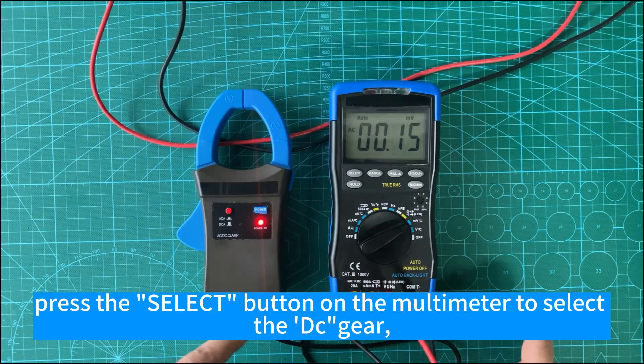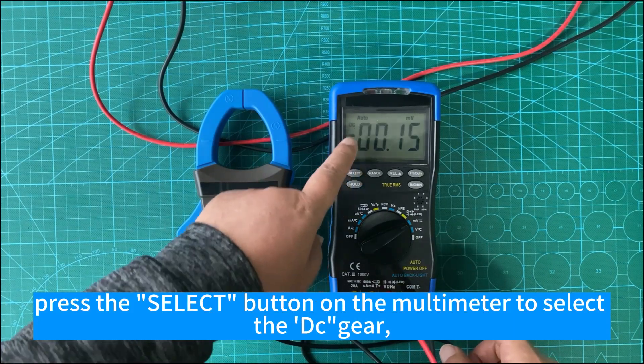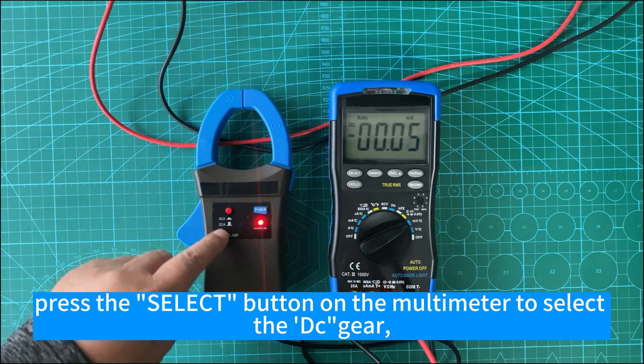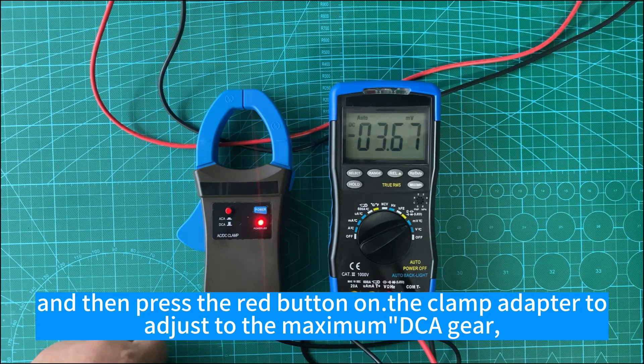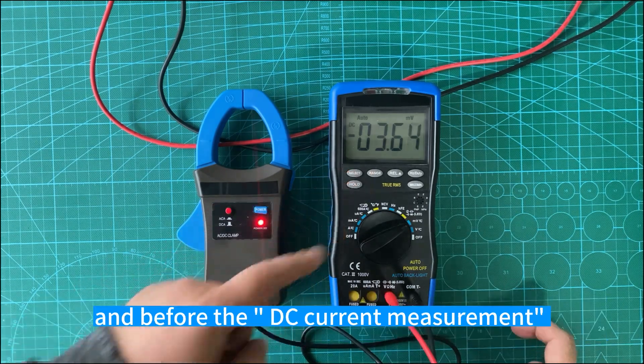DC current measurement: Press the select button on the multimeter to select the DC gear, and then press the red button on the clamp adapter to adjust to the maximum DCA gear.